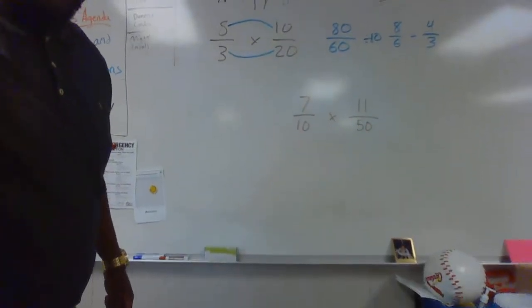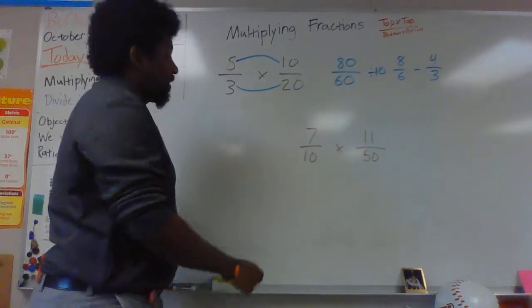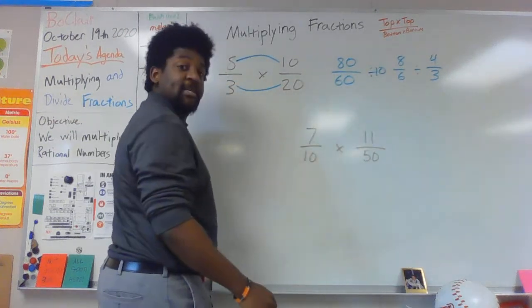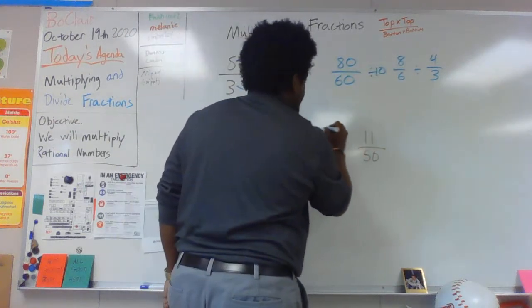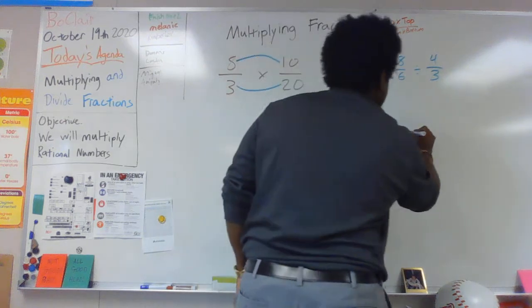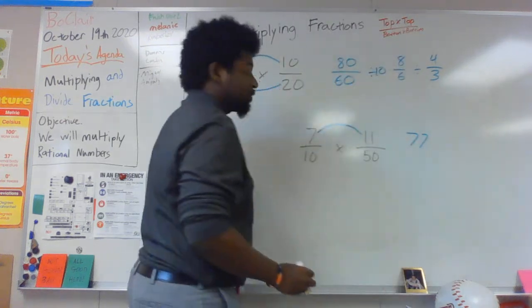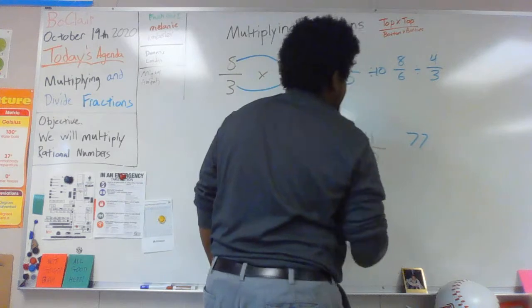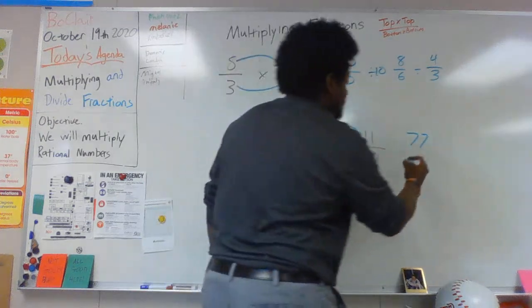Multiplying fractions again. I'm going to do the second problem here: 7/10 times 11/50. Top times top: 7 times 11 is 77. Bottom times bottom: 10 times 50 is 500.